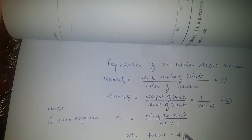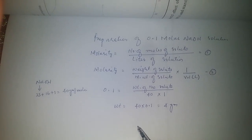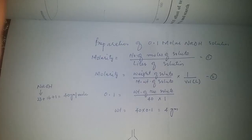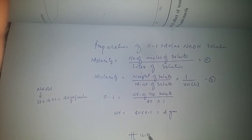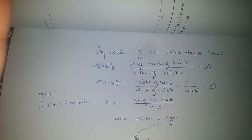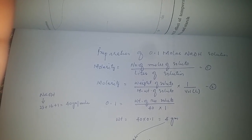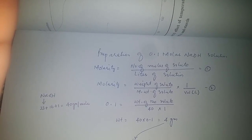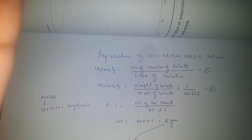Now what we have to do is take a 1 liter flask and dissolve this 4 grams of NaOH into this flask. And in this way, our solution of 0.1 molarity would be ready. Thank you very much.